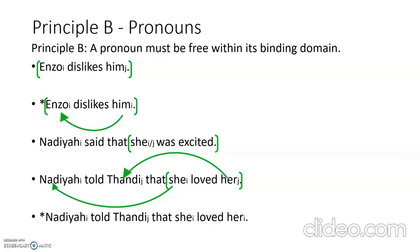The same sentence 'Nadia told Tandi that she loved her' is ungrammatical when she and her refer to the same entity. In that case, the binding domain is 'she loved her', and she and her both refer to Nadia. The pronoun her is not free within its binding domain because she C-commands her and they are co-indexed, so her is bound — which violates principle B.